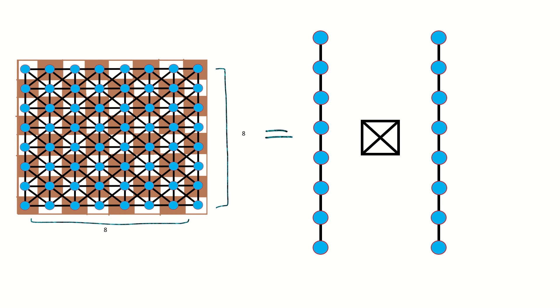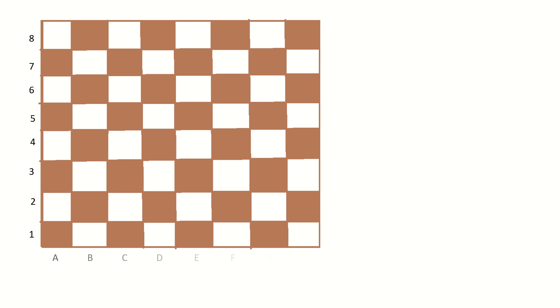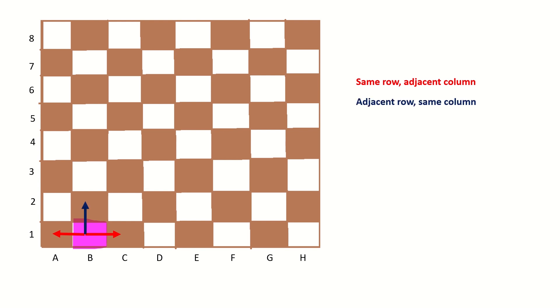Now let's look at why a strong product of two path graphs produces a graph that captures the legal moves of a king on a chessboard. Picture a chessboard where we label the rows with numbers 1 through 8 and label the columns with letters a through h. If our king is stationed at b1, it can move to squares in the same row but in an adjacent column — that is c1 and a1 — or to squares in the same column but in an adjacent row, that is b2.